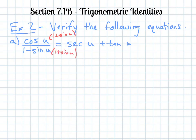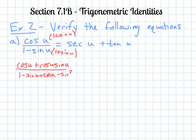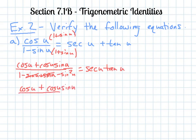So if I multiply those out, I get cosine of u plus cosine of u times sine of u in the numerator. On the bottom, if I multiply that out, I get one minus sine of u plus sine of u minus sine squared of u. Then I can cancel out the sine of u and the negative sine of u, giving me cosine u plus cosine u sine u over one minus sine squared.